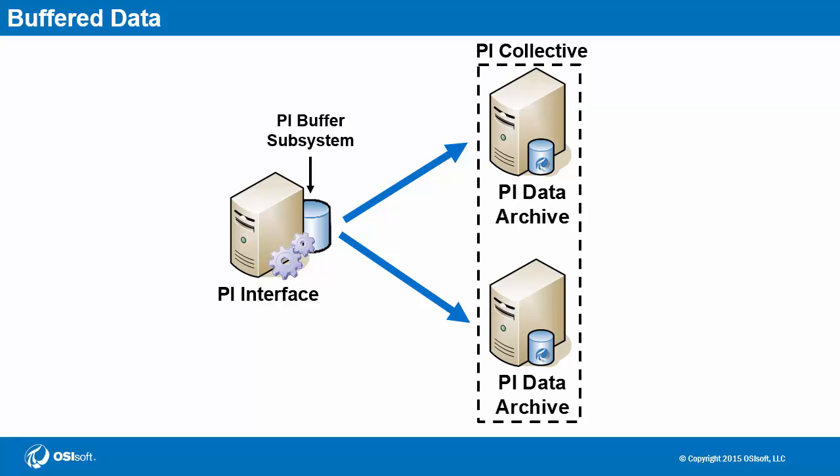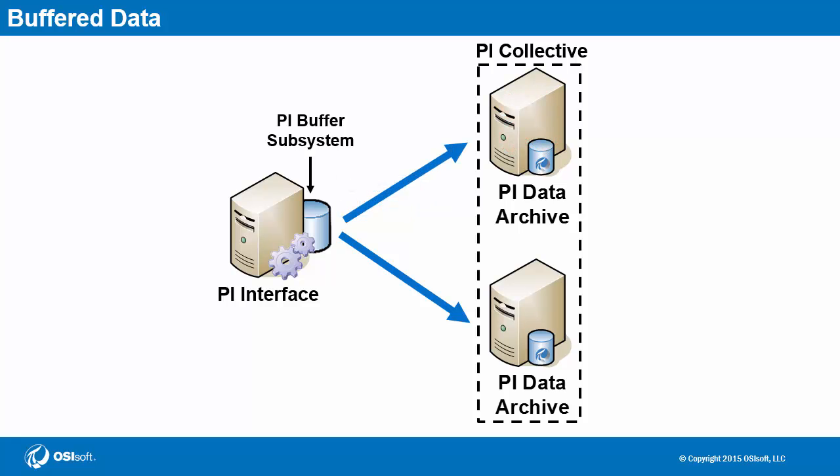Another point to make with buffering is in the name itself. In the scenario that one of the PI data archives goes offline, interface buffering will begin to buffer data — or hold onto it temporarily — while it waits for the PI data archive to become available again. When it is available, it will flush all the held data to the now available PI data archive.